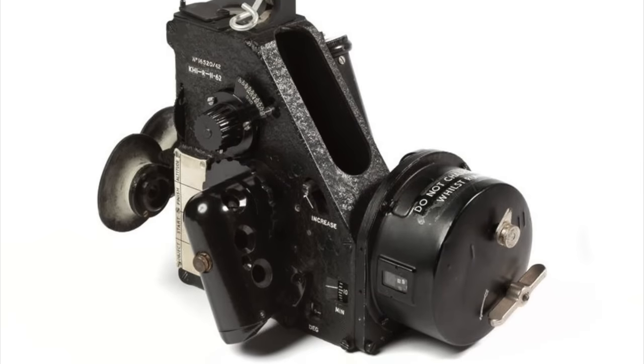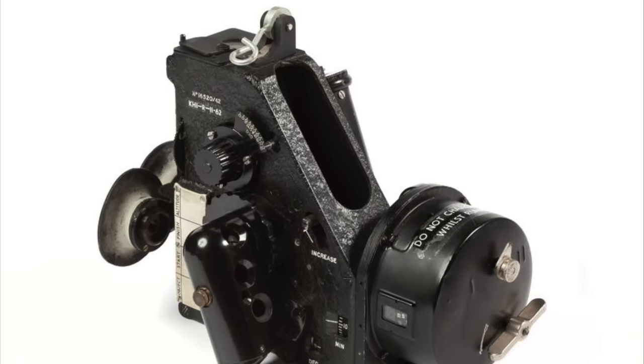Relatively little is known about the early development of the AstroCompass. What is known is that it was either invented or perfected by Philip Francis Everett, who also patented the Mark 9 bubble sextant that we looked at in a previous video.